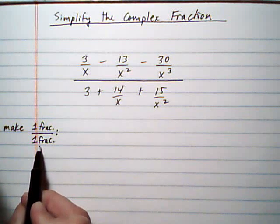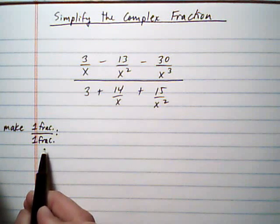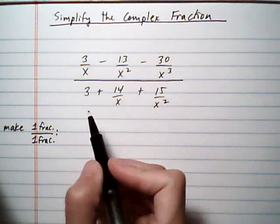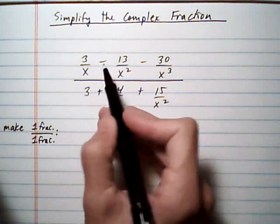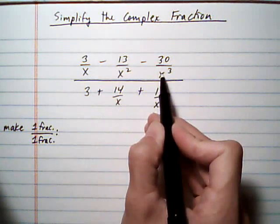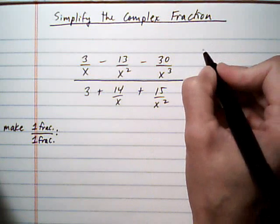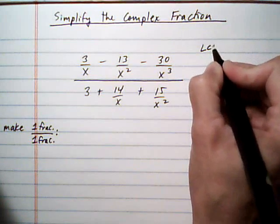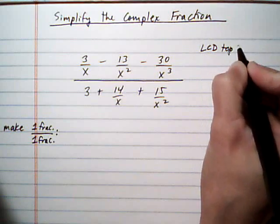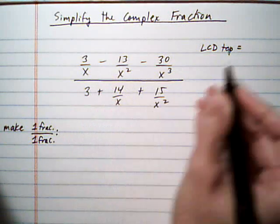I'm going to use this one fraction over one fraction method because most of my students prefer that method. All right, so first thing we want to do is we've got three fractions on top. We want to have just one fraction, which means we need to figure out the LCD of the top. And that's going to be x cubed.